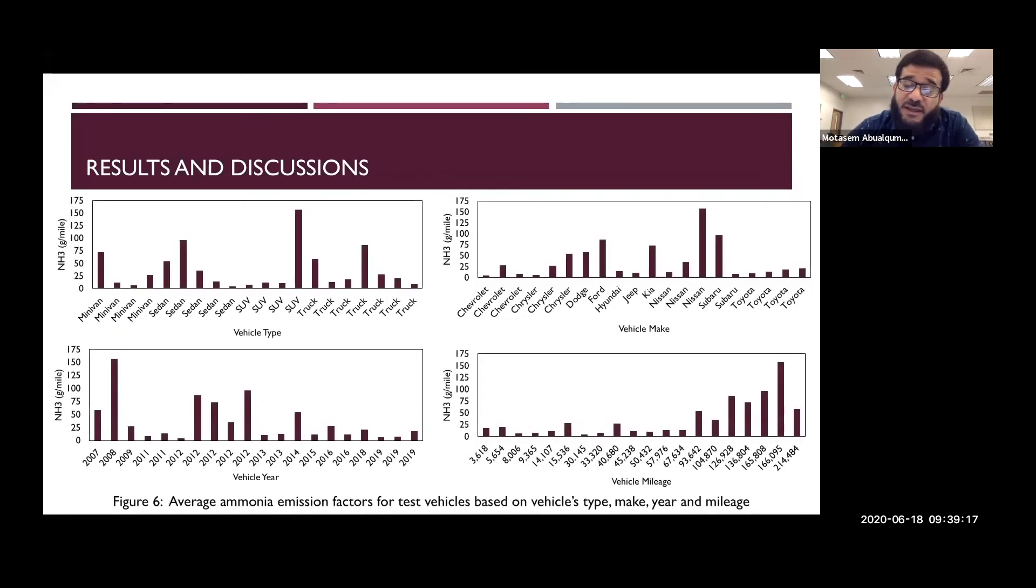We sorted our vehicles based on type, make, year, and mileage. It's quite obvious that when the mileage goes up, the emission of ammonia goes up. It's quite obvious in this one. But when we speak about make, type, or year, I don't think we can conclude that some of these parameters will have a significant effect on the ammonia emission rates. I think we still have to study more parameters to know or to locate what are the parameters that significantly affect the emission rate.